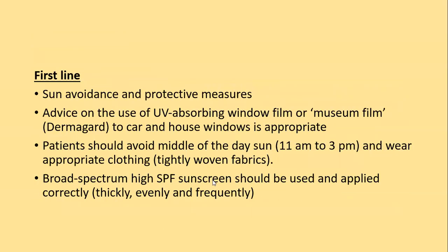First-line therapy for polymorphic light eruption is sun avoidance and photoprotective measures: advise UVB-absorbing window films for car and house windows, avoid midday sun (11 am to 3 pm), wear appropriate clothing of tightly woven fabric. Broad-spectrum high-SPF sunscreen should be used and applied correctly — thickly, evenly, and frequently.